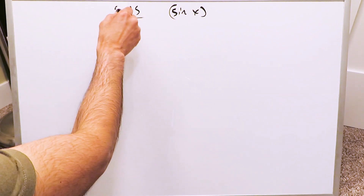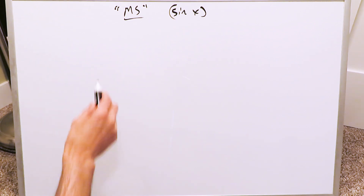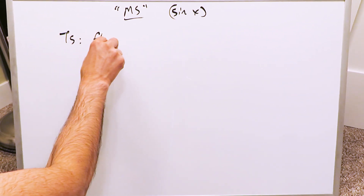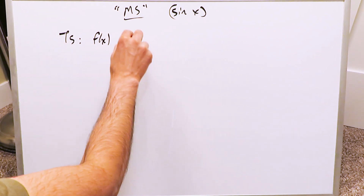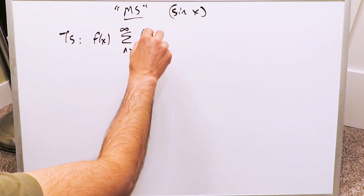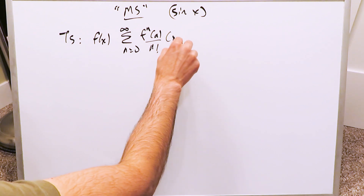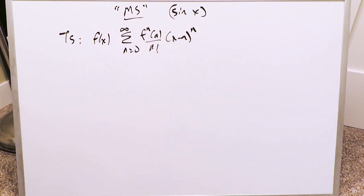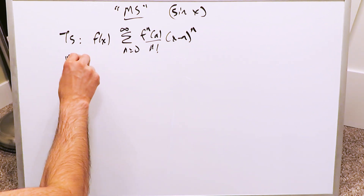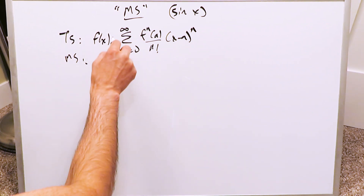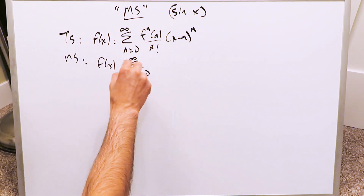Before we start, remember the McLaurin series is Taylor series except it's centered around 0. When you're looking at a Taylor series for a specific function, you're looking at the sum from n equals 0 to infinity of the nth order derivative evaluated at a, divided by n factorial, times x minus a to the power of n — a power series centered around a. When you're looking at McLaurin series, it's centered around 0, so everywhere you see a, it's converted into a 0.